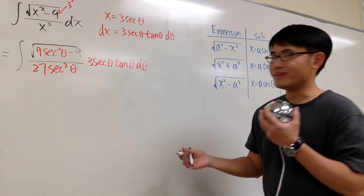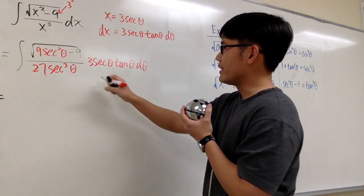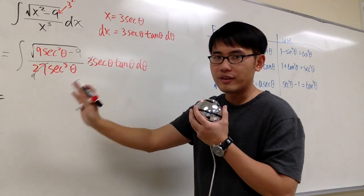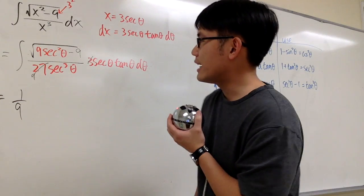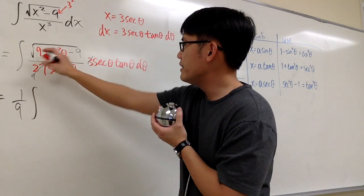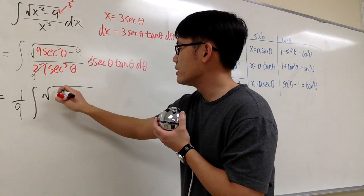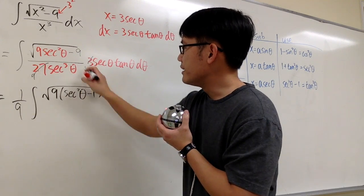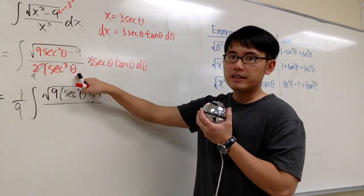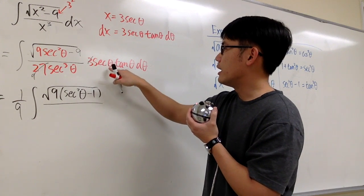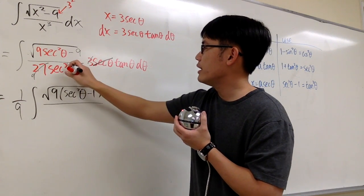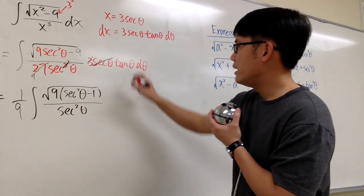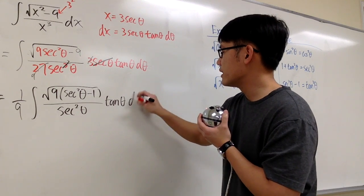Let's see if there's anything we can do. We have the numbers: this is the 3 and this is the 27. We can reduce this to be 9 — in other words, I can take out a 1 over 9 outside. And then let me factor out the 9 from inside the square root, so we have the square root of 9 times the quantity secant squared theta minus 1. In the denominator we have secant to the third power theta.